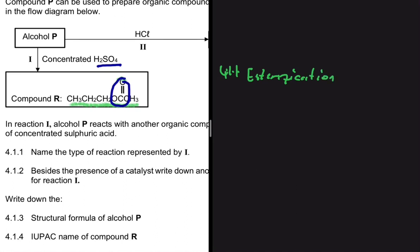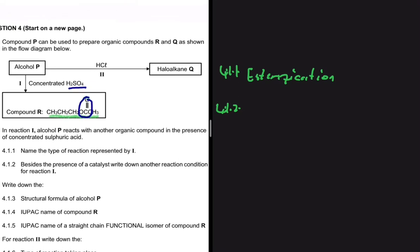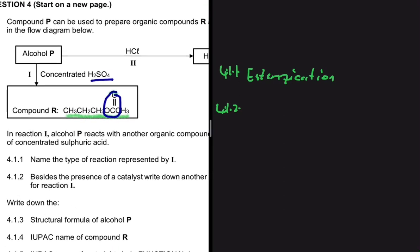Moving to 4.1.2: besides the presence of a catalyst, write down another reaction condition for reaction 1. For esterification to take place, we need H₂SO₄ as a catalyst and heat. So for 4.1.2, our answer would be heat — that is the other reaction condition.